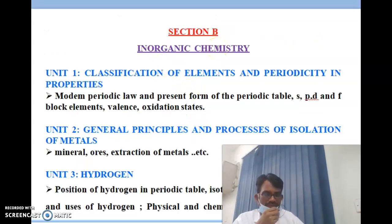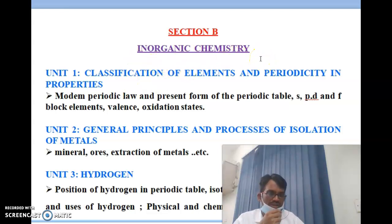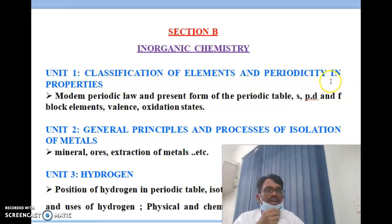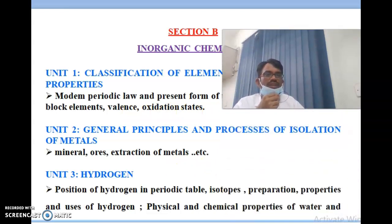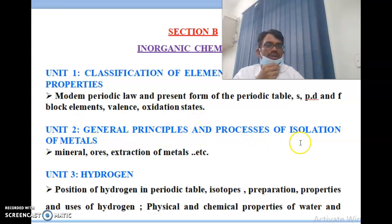Section B is inorganic chemistry, also an important part of JEE Mains and Advanced. Unit 1 covers classification of elements and periodicity in properties: modern periodic law, the present form of the periodic table, s, p, d, and f block elements, and valences. Unit 2 covers general principles and processes of isolation of metals — minerals, ores, and extraction of metals.